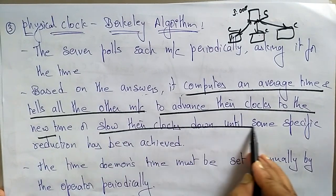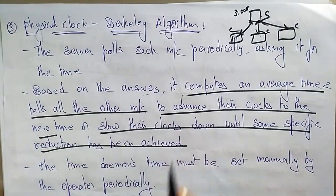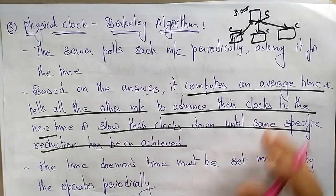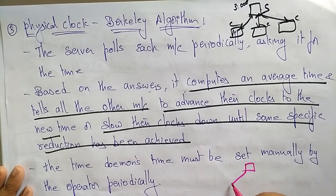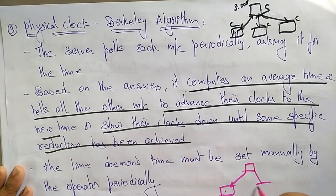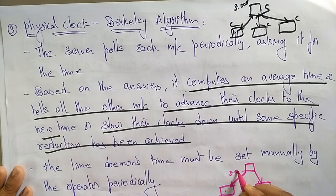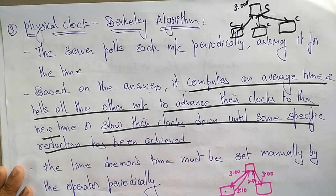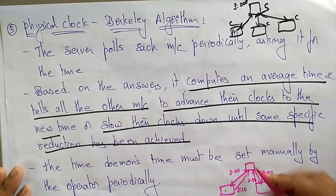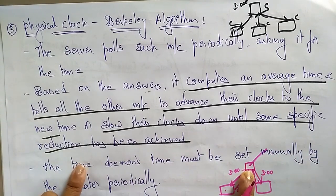Until some specific reduction has been achieved. So here, the server is asking each system for its time. One system replies with 3:10 and another replies with 2:50. Whenever it receives a reply, the server computes what adjustment is needed.